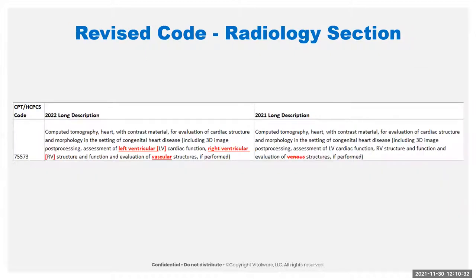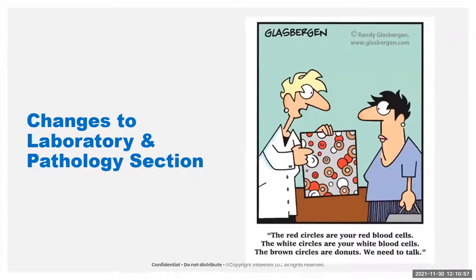There is one code revised in the radiology section: they replaced the word 'venous' with 'vascular' — the most important change — and then spelled out 'left ventricular' and 'right ventricular.' That's an editorial change only. And that's it for radiology. I can't even remember the last time radiology was that small, but that's kind of nice.